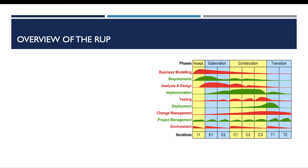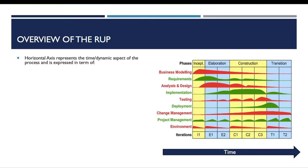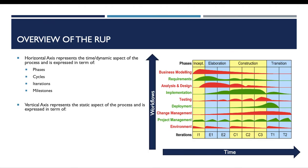This schema represents an overview of the RUP process. We find two axes: the first axis, the horizontal axis, is the time axis representing the dynamic aspect of the process, expressed in terms of phases, cycles, iterations, and milestones. The second axis represents the static aspect of the process, expressed in terms of disciplines, activities, artifacts, and roles. This schema is taken from the official Wikipedia page of the Rational Unified Process.